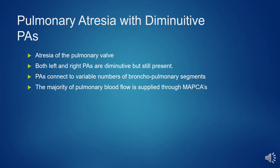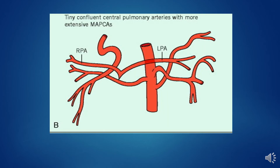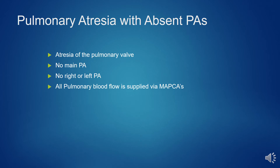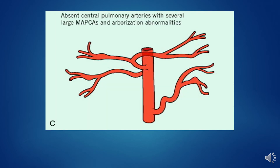Pulmonary atresia with diminutive PAs: atresia of the pulmonary valve where both left and right PAs are diminutive but still present; PAs connect to a variable number of bronchopulmonary segments, and the majority of pulmonary blood flow is supplied through the major aortopulmonary collaterals. Tiny confluent central pulmonary arteries with more extensive MAPCAs can be seen here. Pulmonary atresia with absent PAs: atresia of the pulmonary valve with no main PA, no right or left PAs, and all pulmonary blood flow supplied by major aortopulmonary collaterals. In this diagram you can see absent central pulmonary arteries with several large MAPCAs.